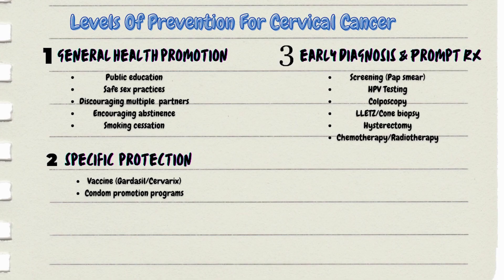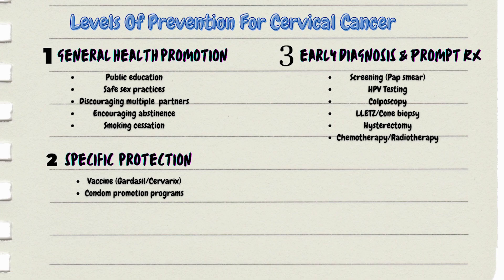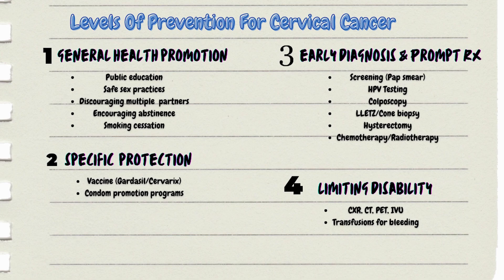Under early diagnosis and prompt treatment for cervical cancer, screening comes first: the pap smear. You can also include other diagnostic measures like HPV testing and colposcopy. Then move on to therapeutic measures like LLETZ biopsy — large loop excision of the transformation zone — cone biopsy, hysterectomy, and other treatment measures like chemotherapy and radiotherapy.